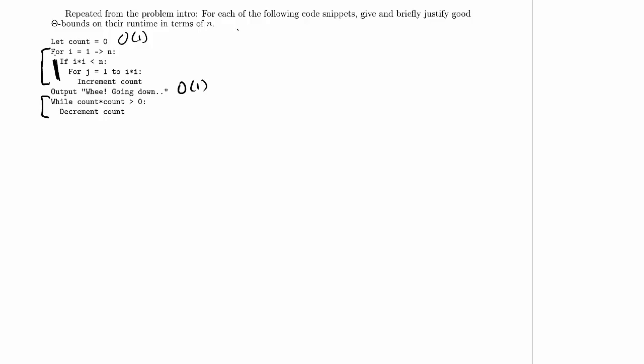It's only when i squared is less than n that we get into that inner loop. So there's going to be a set of iterations of the outer loop that take constant time, and a set of iterations of the outer loop that take maybe something more than constant time. So I'm just going to analyze them separately.